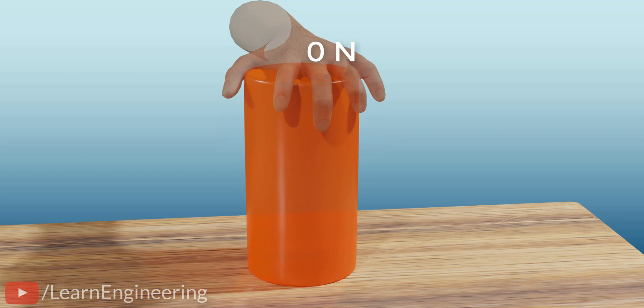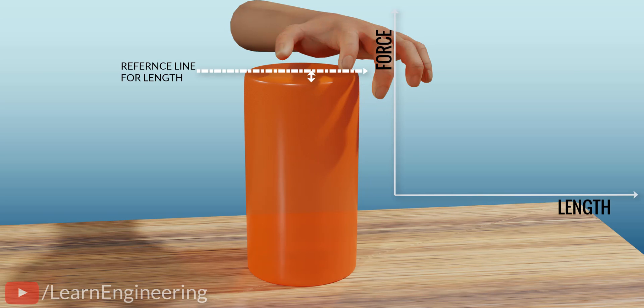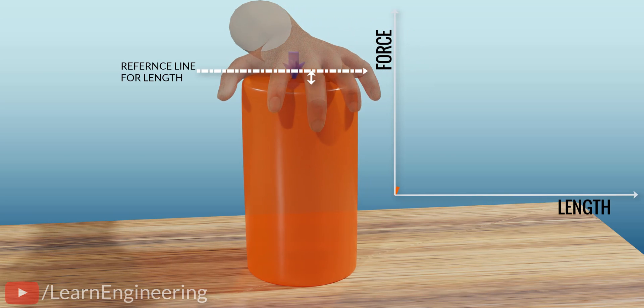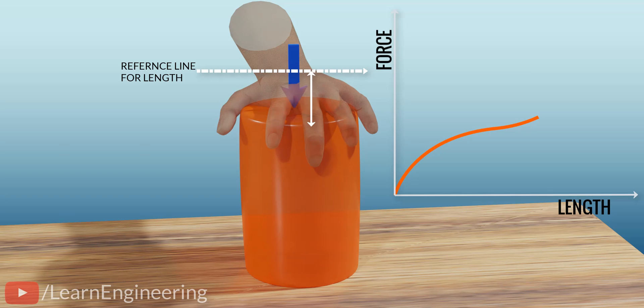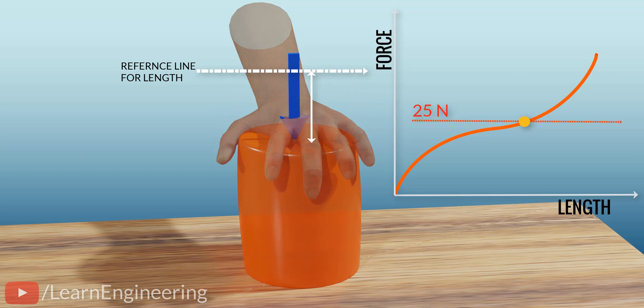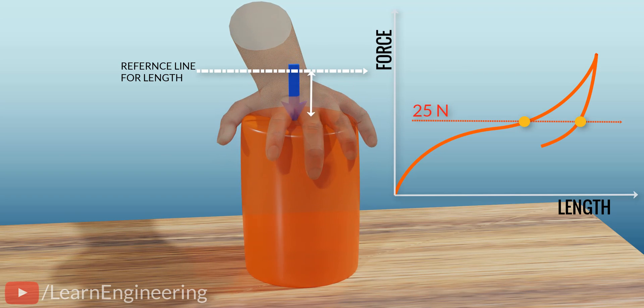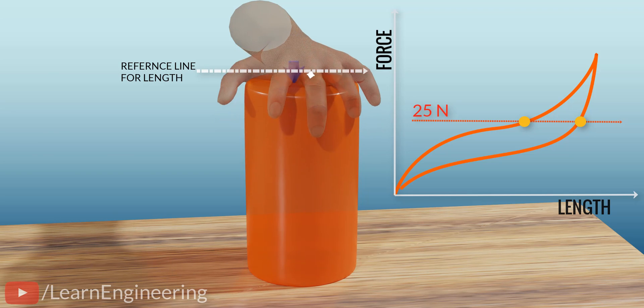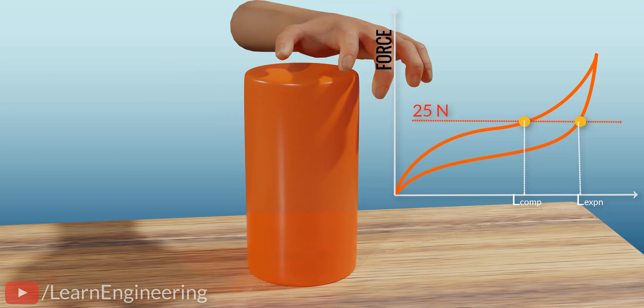This behavior is more clear in the graph that depicts the force versus length for the compression and decompression processes. Rubber behaves differently during compression versus decompression, even if the final shape is the same. This property is known as hysteresis.